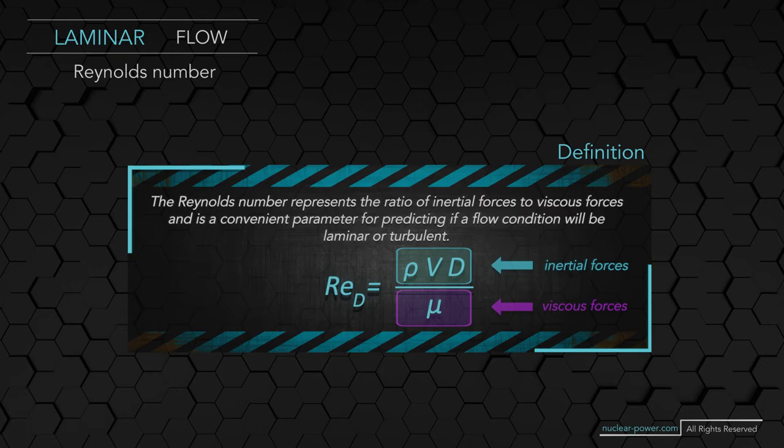The characteristic diameter or length depends on the type of flow we are analyzing, so the Reynolds number is also dependent upon the geometry. The Reynolds number at which the flow becomes turbulent is called the critical Reynolds number. We must note the value of the critical Reynolds number is different for different geometries. For flow in pipes, if the Reynolds number is less than 2,000, the flow is laminar. For flow over a flat plate, the generally accepted critical value is 500,000.